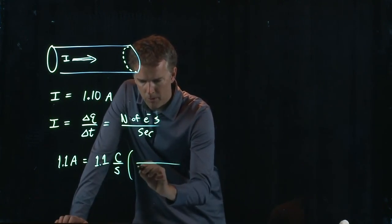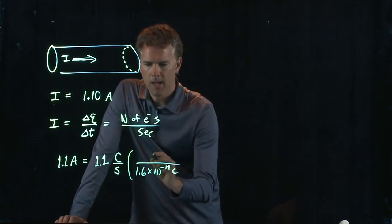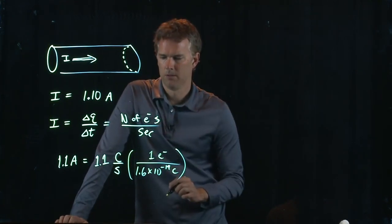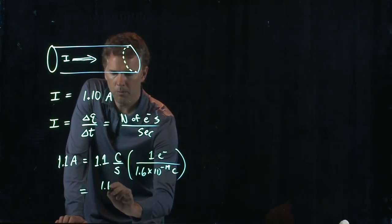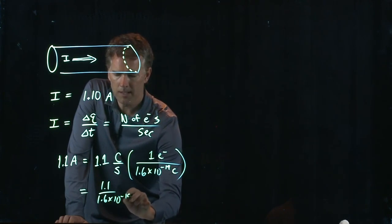So like we said before, 1.6 times 10 to the minus 19 Coulombs is the charge of one electron. And so we get 1.1 over 1.6 times 10 to the minus 19.